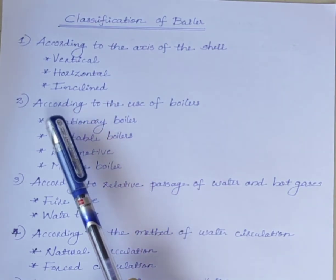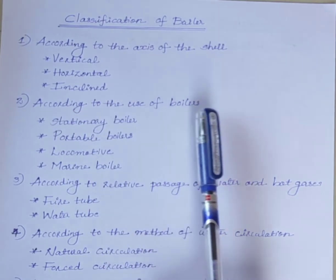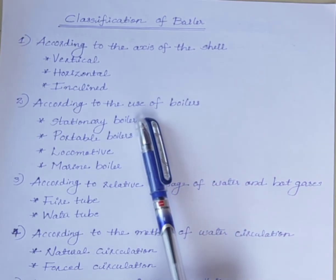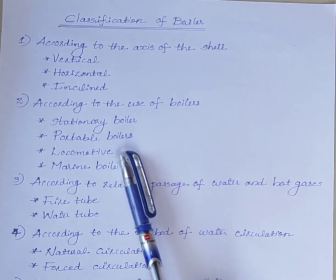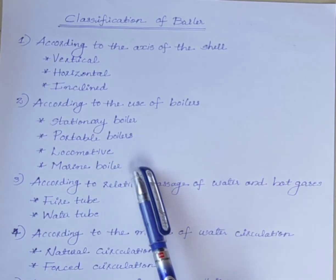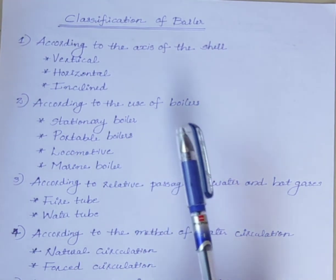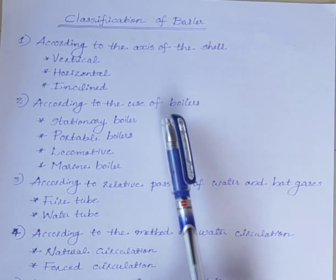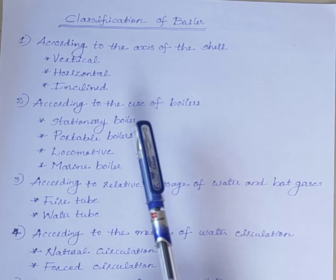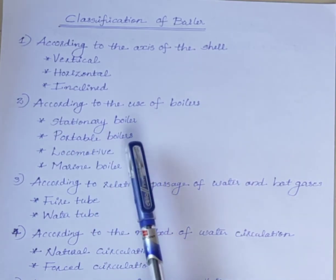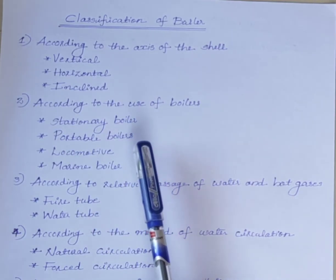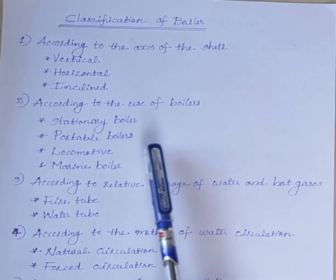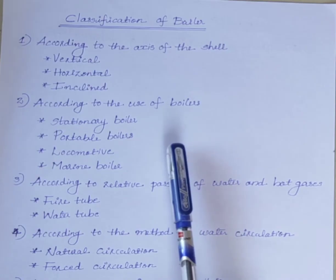The next classification is according to the use of boilers. Boilers are classified into stationary boiler, portable boiler, locomotive boiler, and marine boiler. Stationary boilers are used for power plants. Portable boilers are small in size and used for temporary use at work sites.